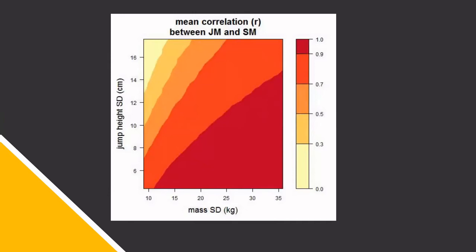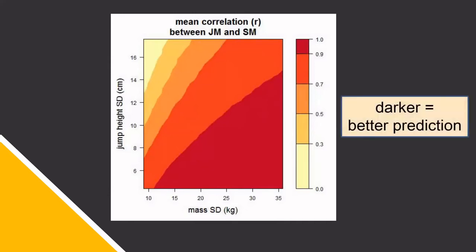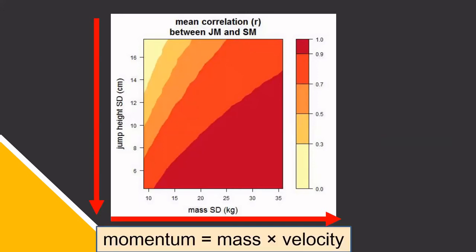The ability of jump takeoff momentum to predict sprint momentum was greatest under relatively high variation in body mass between individuals and relatively low variation in jump height. This is due to the increased emphasis on body mass in these situations.